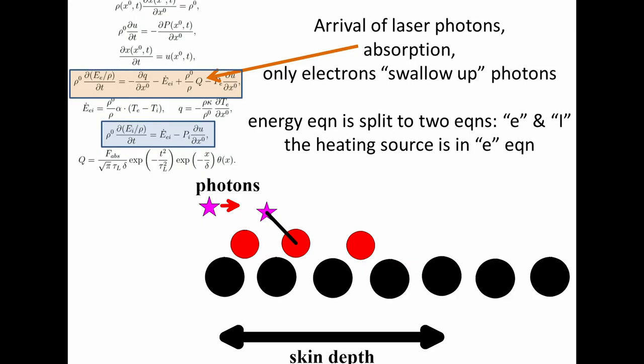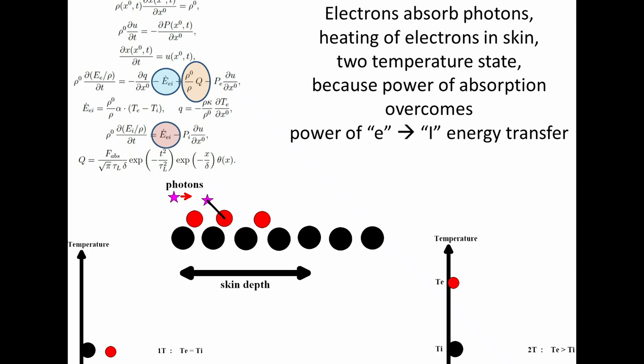And now we radiate photons, laser photons, and they are absorbed only by electrons. Initially we have equal temperatures for electrons and ions, but after heating, electrons become hotter because they absorb energy from this term, this is the absorption term, and they transfer part of this energy back to the ions, but this transfer is rather slow.